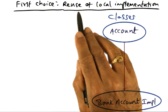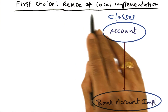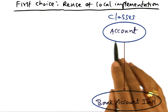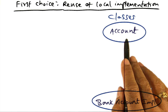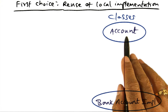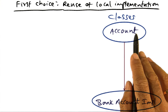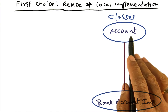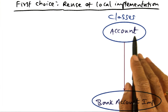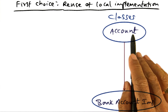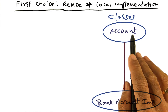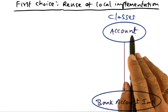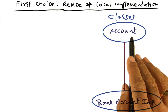The first choice is reusing a local implementation. The developer has access to a local implementation of a class called Account. She then takes that class Account and derives and extends it to create public methods in the API BankAccount.